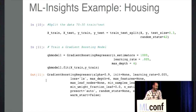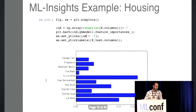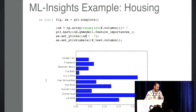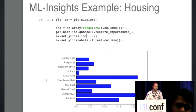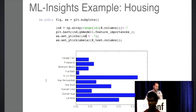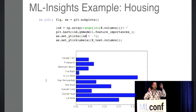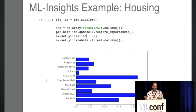If you graph the standard feature importances — which many of you have probably done — you'll get numbers saying overall quality and general living area, which is the square footage, are highest on the importance scale, followed by lot area and year built. But this scale is not very meaningful. As was explained earlier, it's something normalized to one, sort of like a percentage of involvement in the trees. While it gives a rough ranking, it doesn't tell you much about why or how a feature is important — for example, how much does square footage actually affect the price?